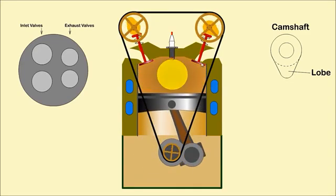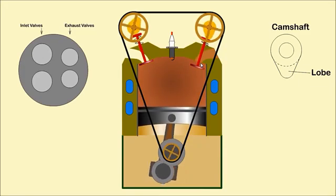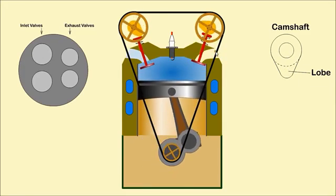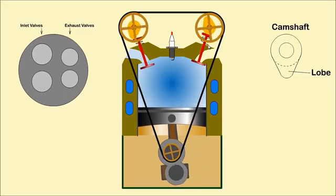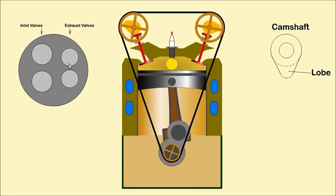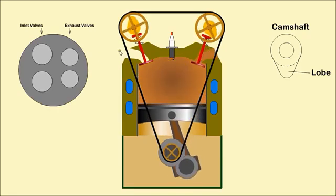Valves are used to allow air to enter and exhaust gas to exit from the cylinder. They are opened by the lobe on the camshaft and closed by spring pressure. Usually inlet ports are larger than exhaust ports as it is more difficult to get air into the cylinder.